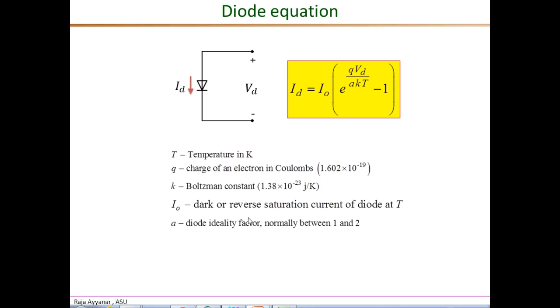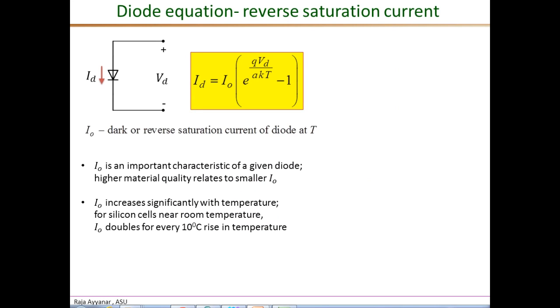As indicated, the value of the ideality factor is normally between 1 and 2. A few points about this reverse saturation current IO: IO, as I mentioned, is an important characteristic that defines a diode, and higher material quality of the diode relates to smaller reverse saturation current IO. IO is a very strong function of the temperature.